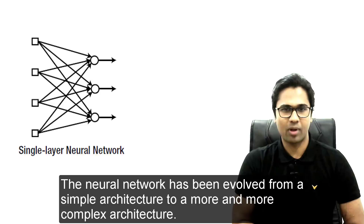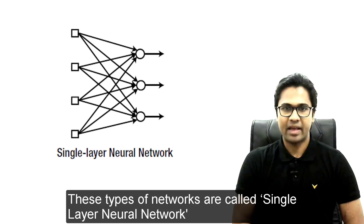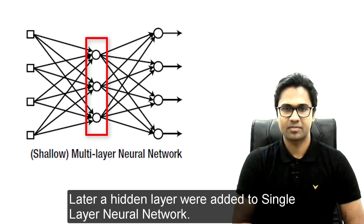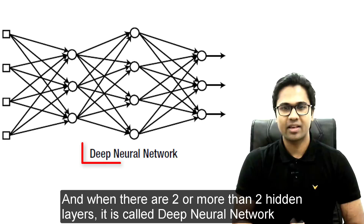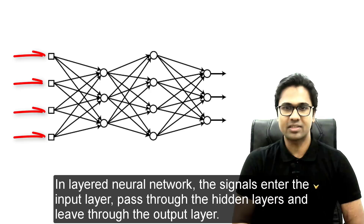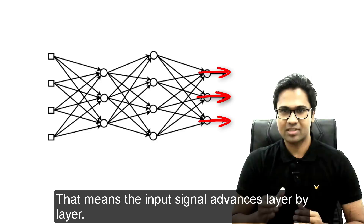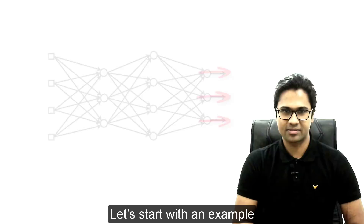The neural network has evolved from a simple architecture to more and more complex ones. At the beginning, neural networks had only input and output nodes — these are called single-layer neural networks. Later, a hidden layer was added, forming what is called a shallow network or vanilla neural network. When there are two or more hidden layers, it is called a deep neural network. In a layered neural network, signals enter the input layer, pass through the hidden layers, and leave through the output layer, advancing layer by layer.